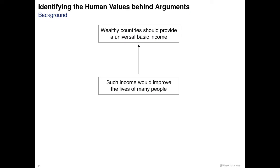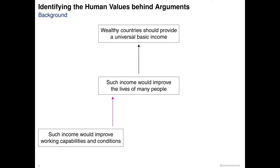But first, let me illustrate what we mean by human values behind arguments. Consider this example: wealthy countries should provide a universal basic income because such income would improve the lives of many people. Let us say you are not convinced and ask, why is this true? One could say that is true because such income would improve working capabilities and conditions. I would like to call this epistemological support, because it is about why we know that something is true.